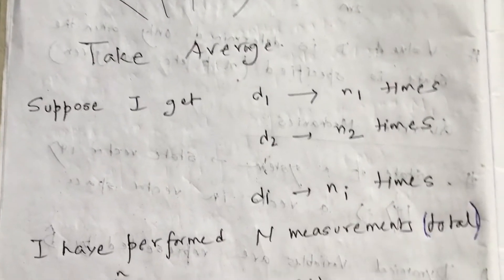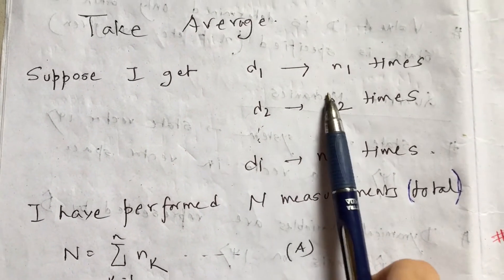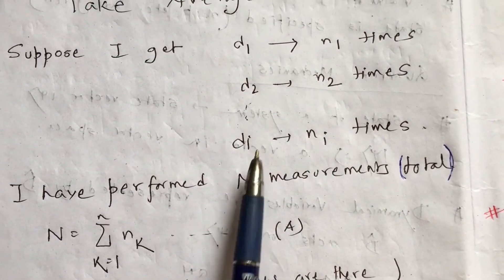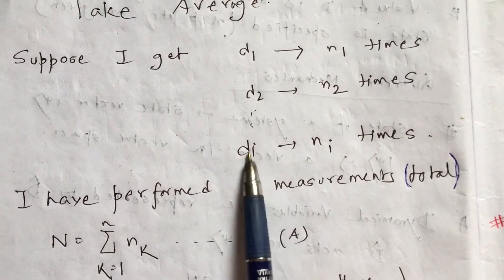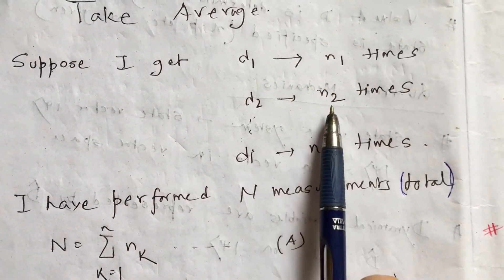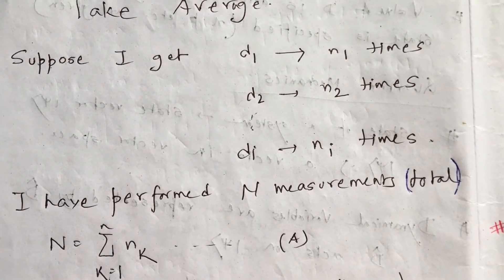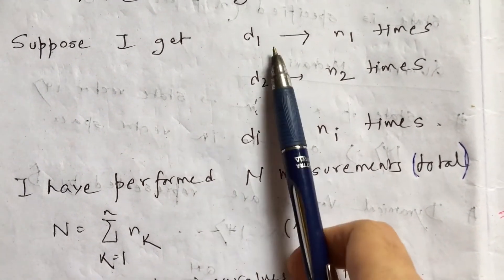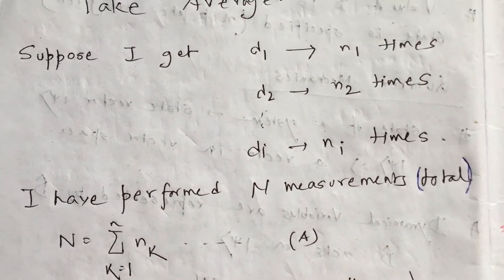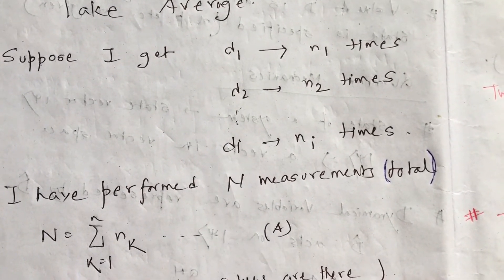Suppose after measurement I observe that I am getting d1 n1 times, d2 n2 times, d3 n3 times, and di ni times. For example, n1 may be 1, n2 may be 1. But it may not be 1 also — suppose I get d1 two times, d3 seven times, or di two times.